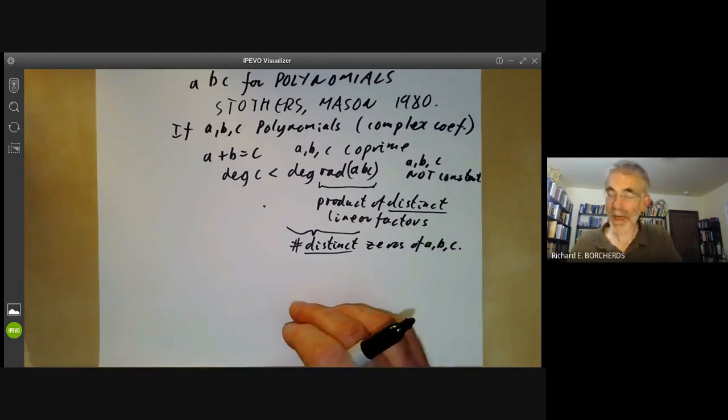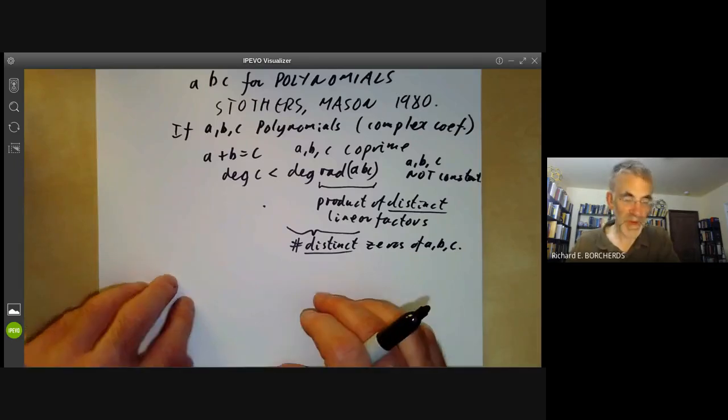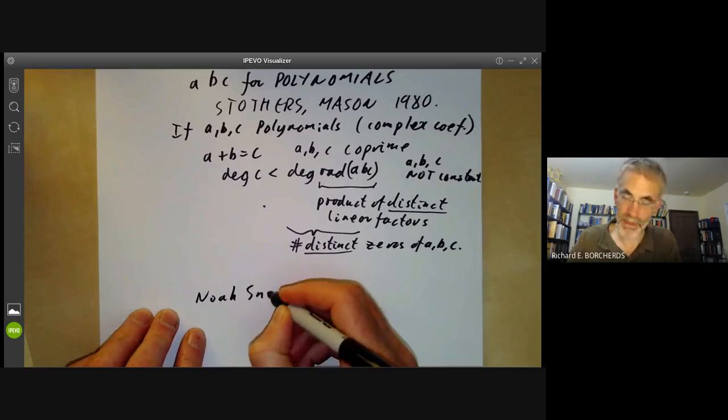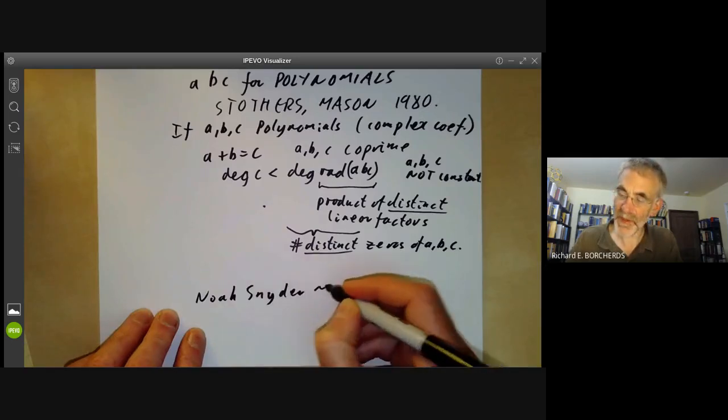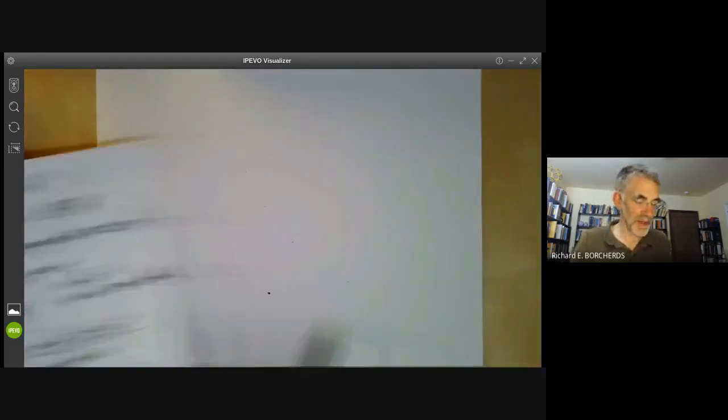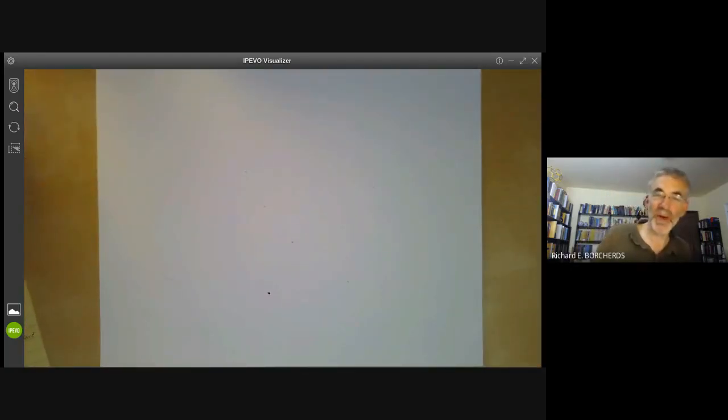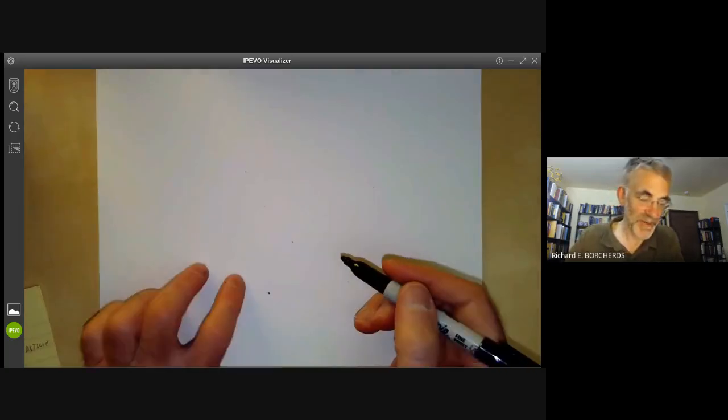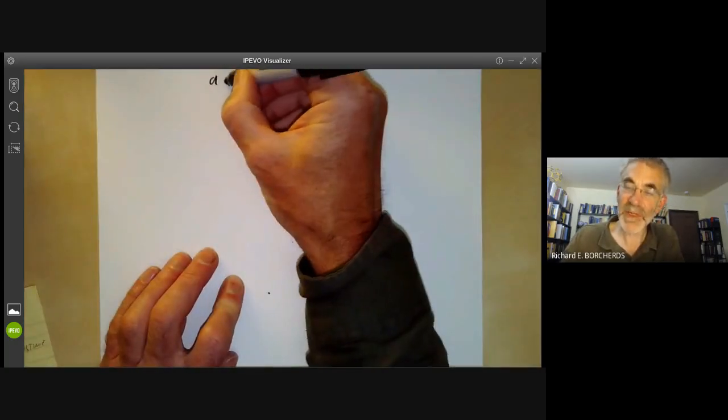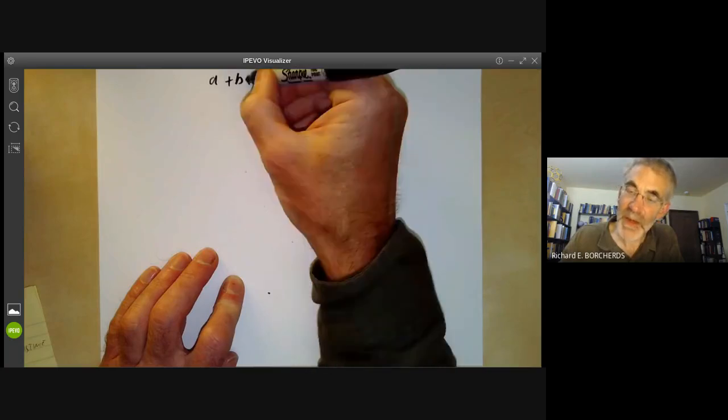And it has an amazingly short proof, which I think was due to Noah Snyder in about the year 2000, which possibly fits onto one piece of paper and uses nothing more than basic calculus. So if you know what the derivative of a polynomial and the derivative of a quotient is, and if you know enough, that's enough to follow this proof.